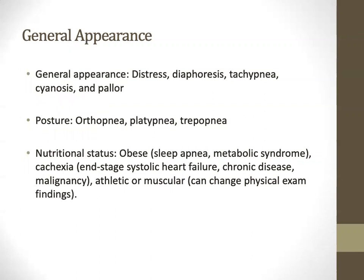Next, general appearance. Things to look for include distress, diaphoresis, tachypnea, cyanosis, and pallor — especially important in our patient population. Posture is important too: orthopnea, as well as platypnea, which is desaturation or dyspnea when the patient is seated upright rather than supine. This can be seen in conditions with right-to-left shunting, liver cirrhosis, PFOs, and ASDs. Trepopnea is dyspnea and oxygen desaturation when lying on one side, seen with large pleural effusions.